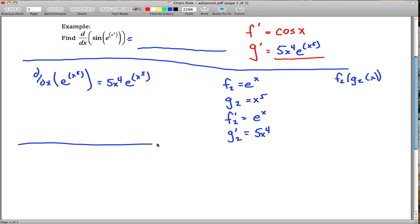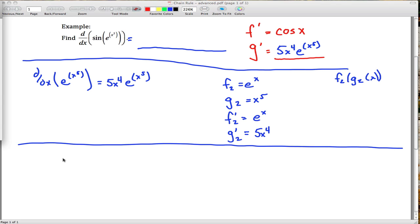And the other way that I speak of is you kind of peel away at the layers. So we're taking the derivative of the outermost thing we have here, which is sine, sine of something. Sine of what? Sine of e raised up to some power. What power? Raised up to the x to the fifth.